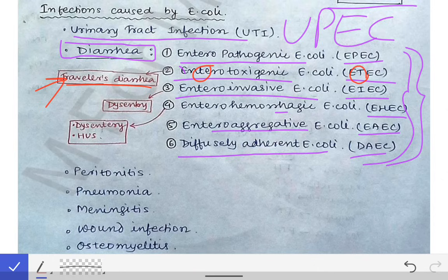The second important one is EIEC, enteroinvasive E. coli. Whenever the word invasive comes up, it means there is going to be some bleeding — whenever there is invasion, bleeding occurs. So if this E. coli invades the gut wall, it will cause bleeding, meaning there will not only be diarrhea but bloody diarrhea, which is called dysentery. So enteroinvasive E. coli causes dysentery.